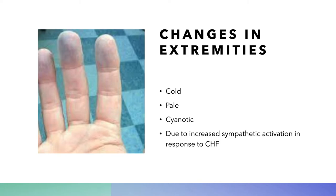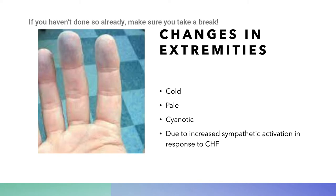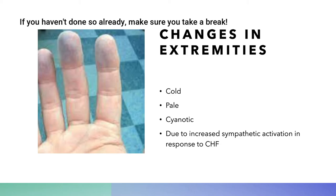You might see cold, pale, cyanotic extremities like fingers and toes, due to increased sympathetic activation. Physiologically, when cardiac output is insufficient, the sympathetic nervous system stimulates the heart to beat more forcefully and rapidly, but it also constricts blood vessels. Widespread sympathetic vasoconstriction causes changes in the extremities — decreased blood flow equals cold, pale, cyanotic extremities.